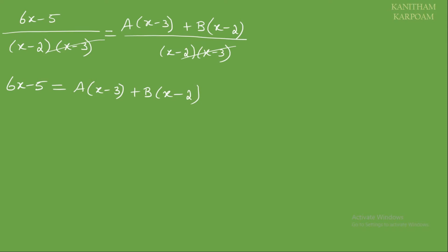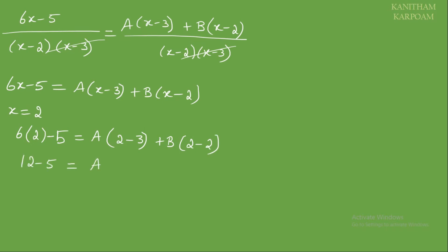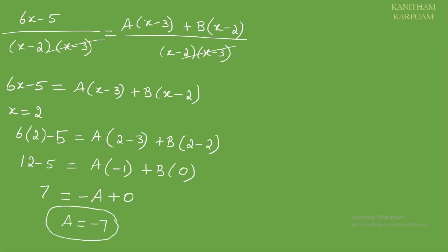After cancelling, 6x minus 5 equals A times x minus 3 plus B times x minus 2. To find A, substitute x equal to 2: 6 times 2 minus 5 equals A times 2 minus 3 plus B times 2 minus 2. So 12 minus 5 equals A times minus 1 plus B times 0.